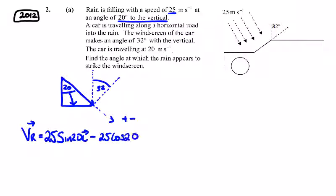So this gives, it's going to give me 8.55 in the i direction, minus 23.49 in the j direction.